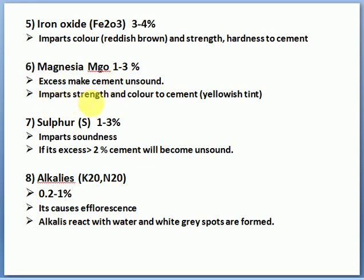Magnesia's function is to impart strength and color to cement. When iron oxide and magnesia combine, the final cement gets a gray color with a yellowish tint. Next, sulfur — 1 to 3%. Sulfur imparts soundness to the cement. If it exceeds 2%, the cement becomes unsound again — volume expansion occurs. Both sulfur and magnesia cause unsoundness.